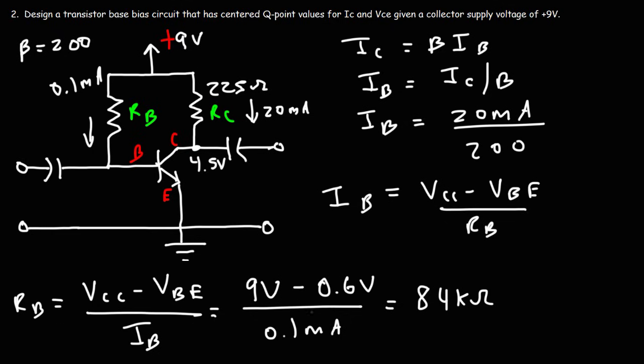That is the value of RB that will give us the desired current of 0.1 milliamps. With a beta of 200, we get a collector current of 20mA, which sets VCE to 4.5 volts — half of 9 volts. That's how you design a transistor base bias circuit with centered Q-point values for IC and VCE.